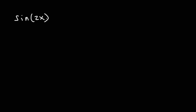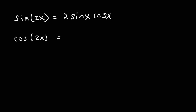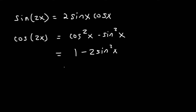Next we have the double angle formulas. Sine 2x is equal to 2 sine x cosine x. And then cosine 2x — there are three forms you can convert this into. You can convert it to cosine squared minus sine squared, or set it equal to 1 minus 2 sine squared, or 2 cosine squared minus 1.